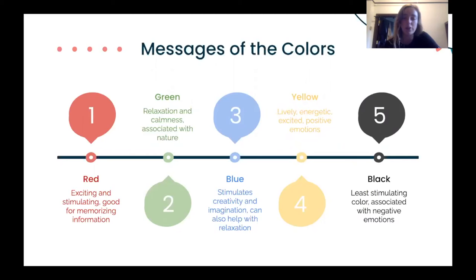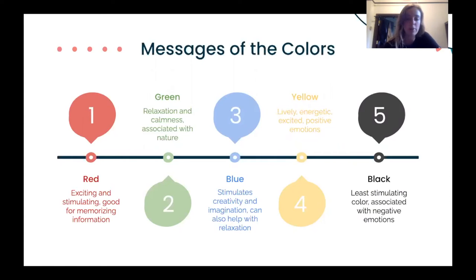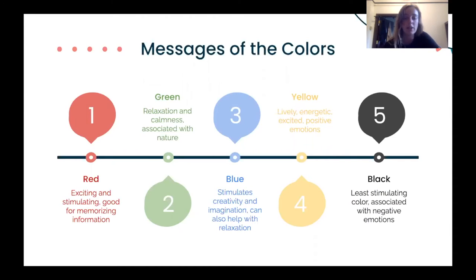Studies found that light colors suggest calmness and relaxation, while bright colors encouraged activity and kept students awake. Red is the most exciting and stimulating color — on tasks where lots of attention is required, such as memorizing information, red is appropriate. Research shows that green indicates feelings of relaxation and calmness, followed by happiness, comfort, peace, hope, and excitement. Researchers think green is associated with these emotions because it is also associated with nature and trees, which creates feelings of comfort and soothing emotions.